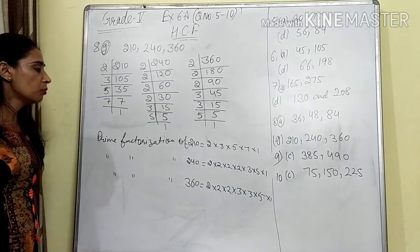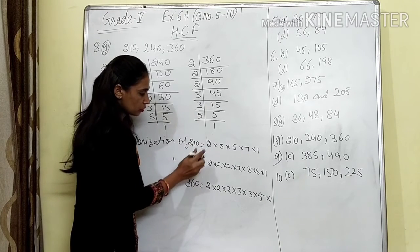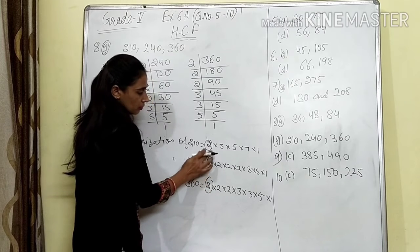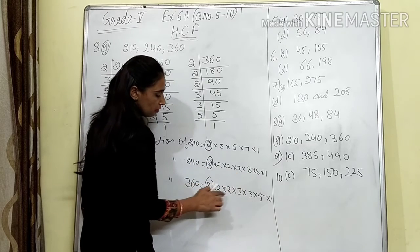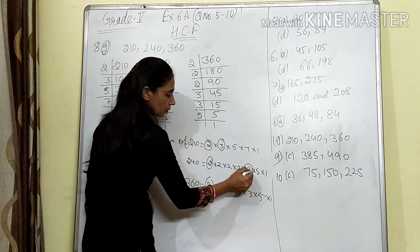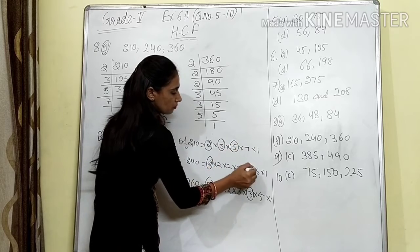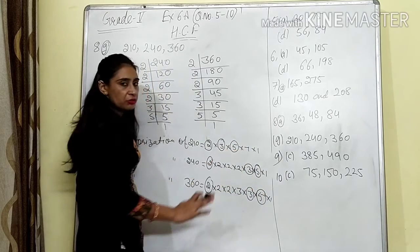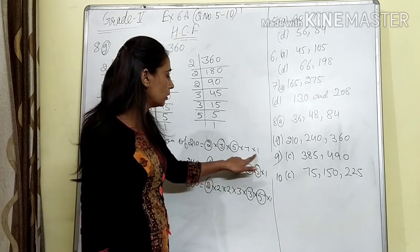Prime factorization of 210 is 2 × 3 × 5 × 7 × 1. Prime factorization of 240 is 2 × 2 × 2 × 2 × 3 × 5 × 1. Prime factorization of 360 is 2 × 2 × 2 × 3 × 3 × 5 × 1. Now make pairs of common factors: 2 is present in all three. 3 is present in all three. 5 is also present in all three. But 7 is only in 210, not in the others.